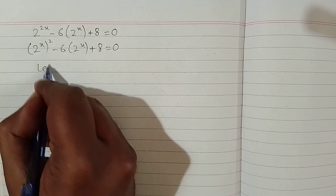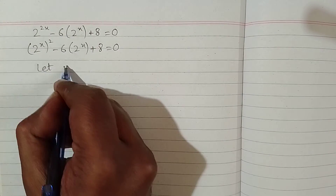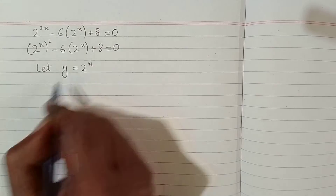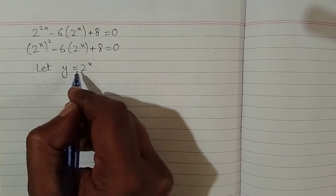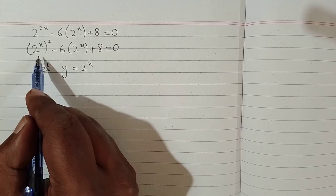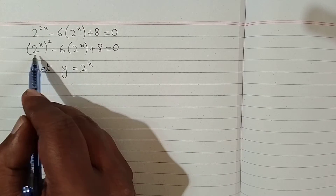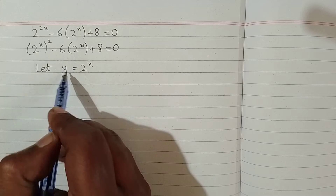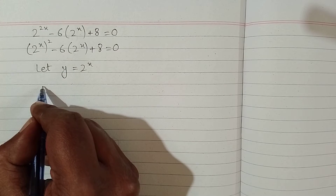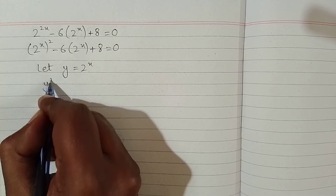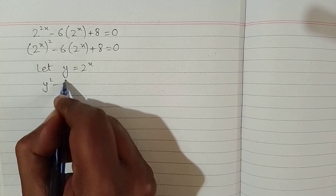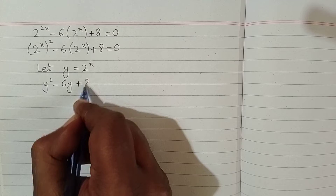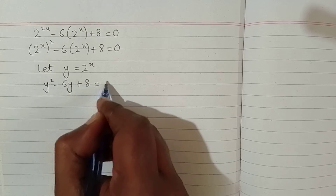Now let y equal 2 raised to the power x, so we can replace 2 raised to the power x by y. We then have y squared minus 6y plus 8 is equal to 0.